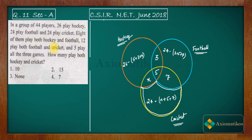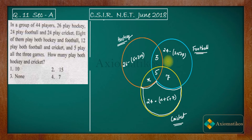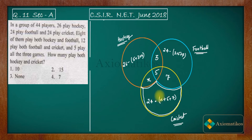We have now written everything needed in the Venn diagram. The region representing only hockey players are those not playing football or cricket. Similarly, the other exclusive regions represent players who play only football and only cricket respectively.